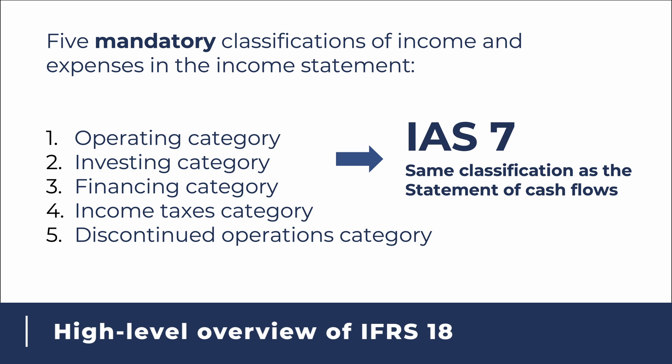Beware though that IAS 7 and IFRS 18 do not have the same requirements on how to distinguish among the three activities, although some concepts might overlap. This means that when you are working with the cash flow statement, you have to refer to IAS 7, and when you are working with the income statement, you need to refer to IFRS 18.